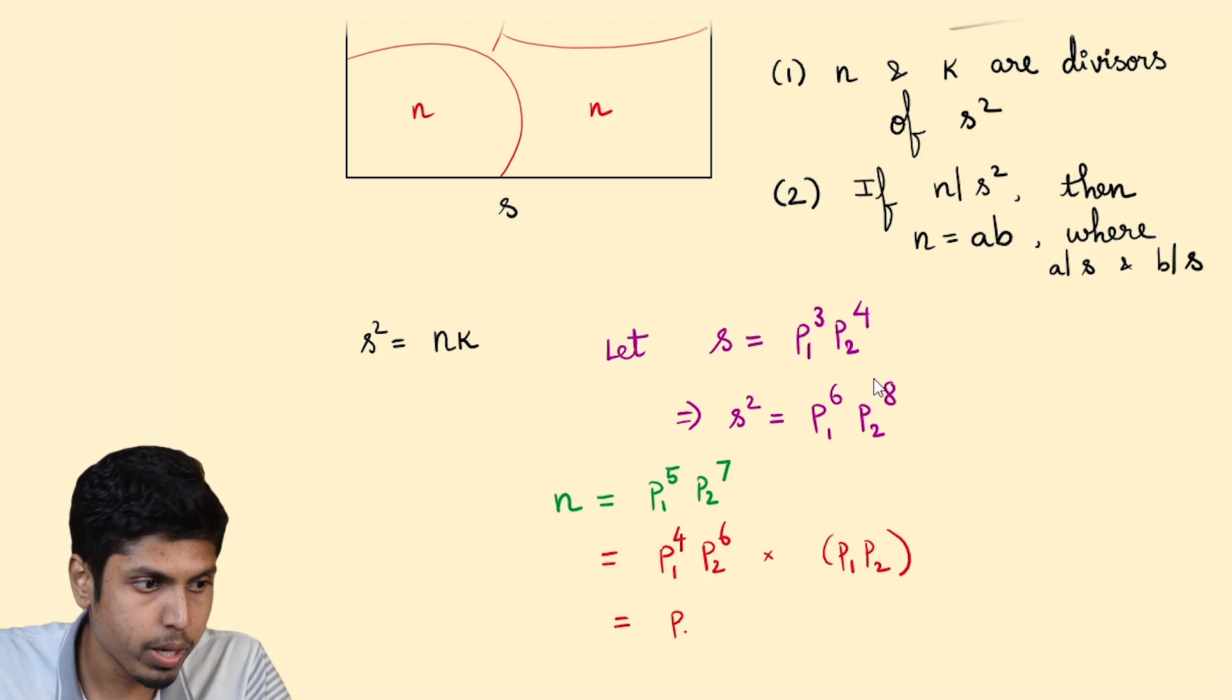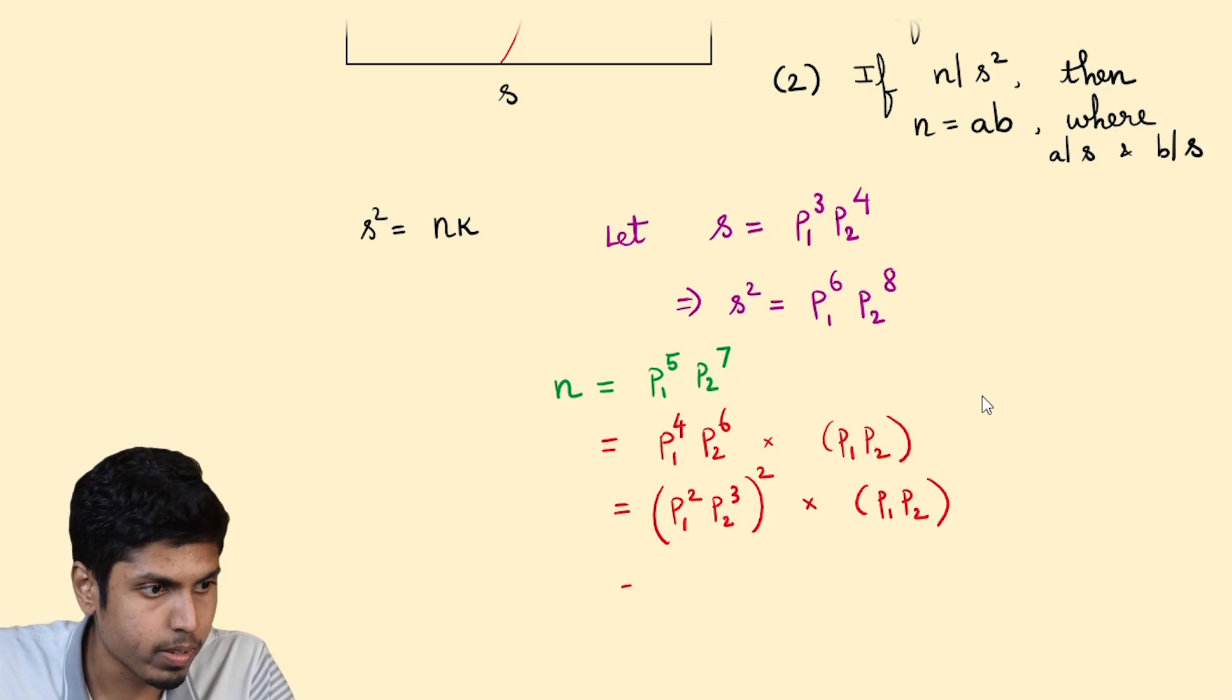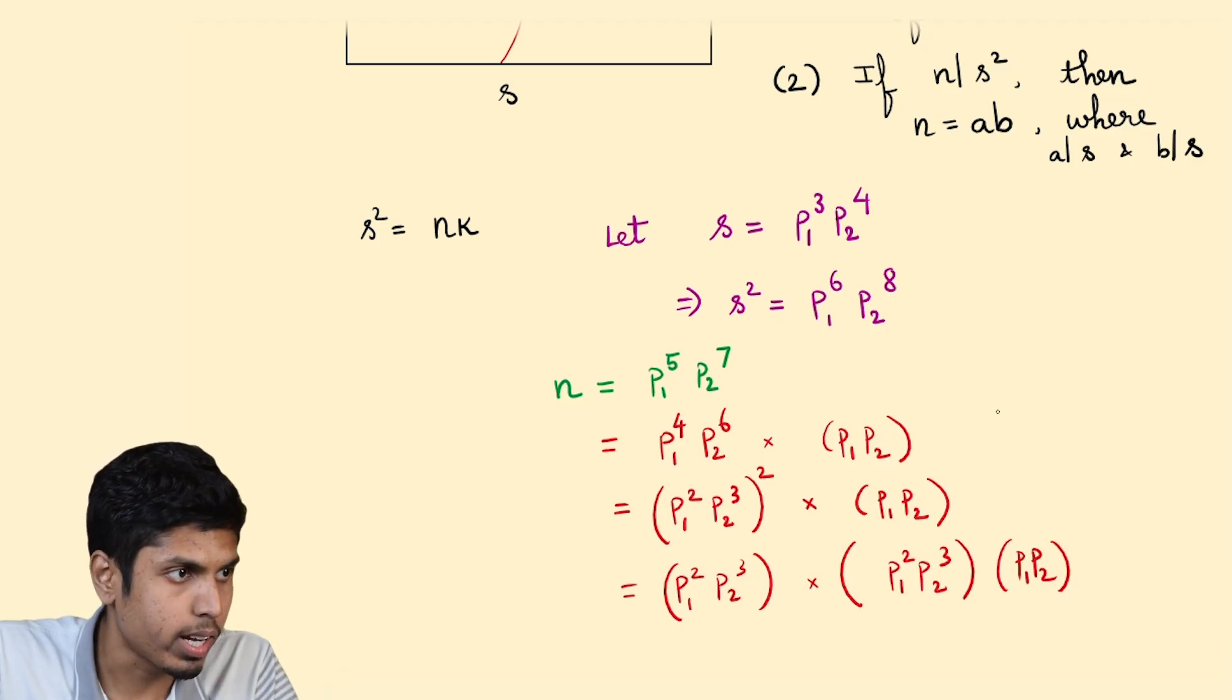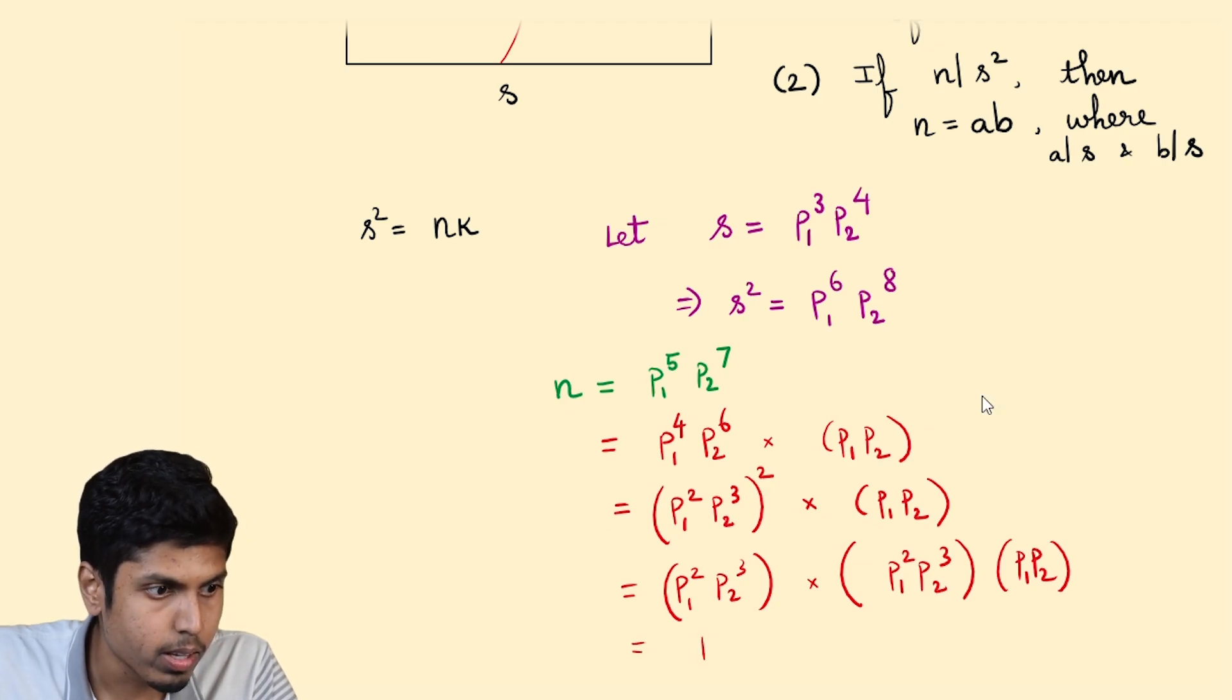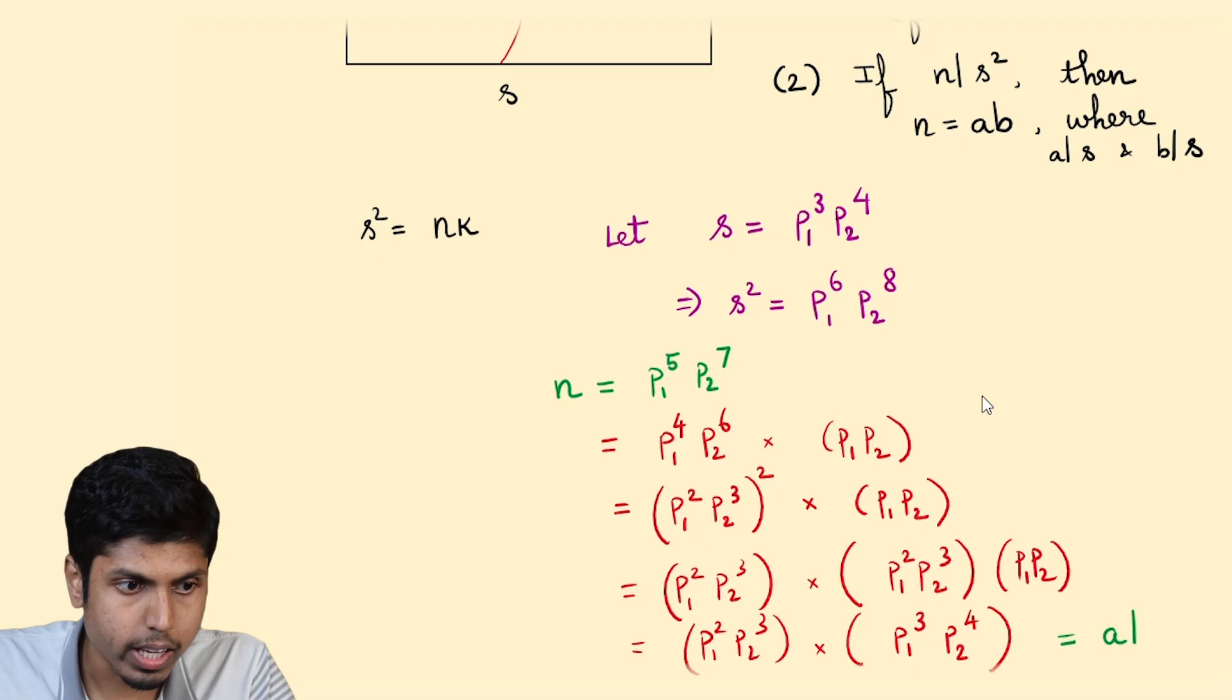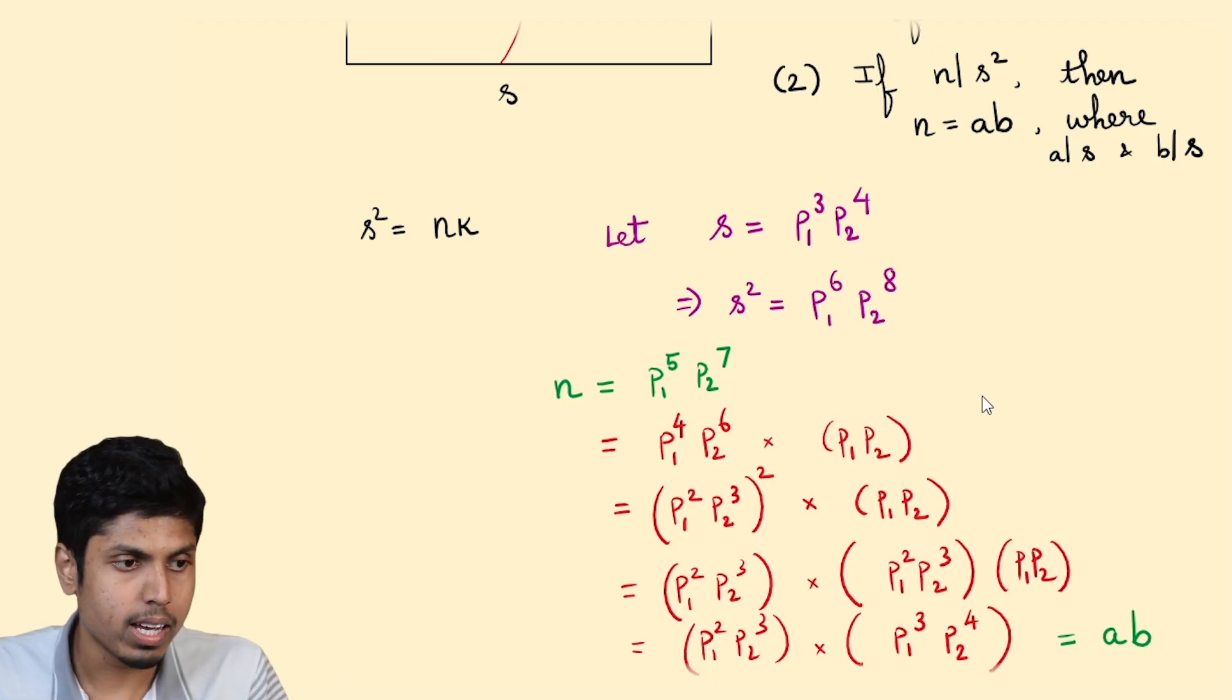So if you already have an even exponent, then completely consider it in the even powers. So this would give us P₁ square times P₂ cube the whole squared, times P₁ P₂. Now this can be written as P₁ squared P₂ cube times P₁ P₂. Now just combine these two and we can write as P₁ squared P₂ cube times P₁ cube P₂ power 4. Now these are the factors A and B. Clearly, A divides S and B divides S, and of course AB equals N. That's how we arrived at it.